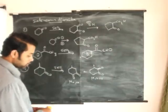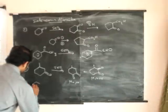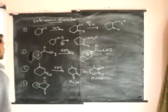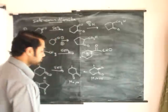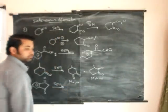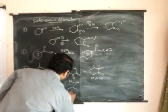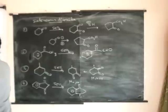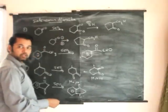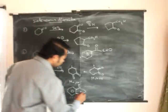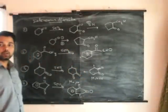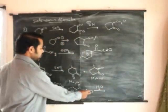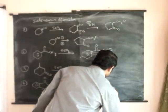One more example of this oxidation: if we have this compound and perform selenium dioxide reaction, this is an active methylene compound, so this is the compound it will give. This is an unstable compound - it immediately loses a water molecule and will exist in the keto form.